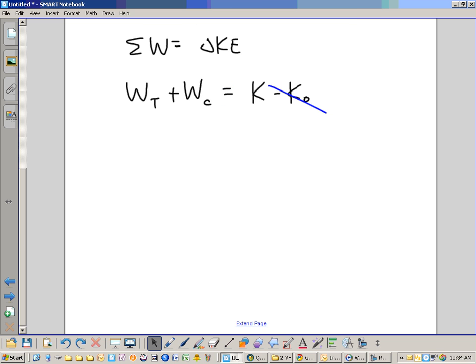So now we know that the work done by the catapult, which is what we're being asked for, right? So now, just doing a little algebra, work done by catapult is going to be equal to the final kinetic energy minus the work done by thrust. Okay? So what is the work done by the catapult? Let's figure it out.